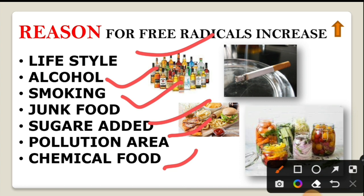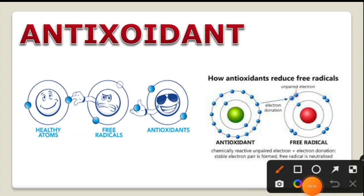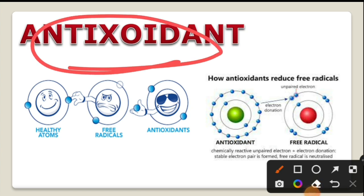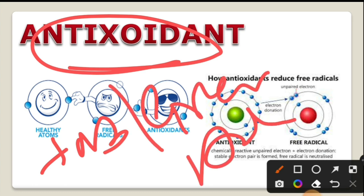To control free radicals, the key is antioxidants. Antioxidants are found in foods like green tea, which is one of the best antioxidant sources. Antioxidants help reduce the level of free radicals in the body and bring them under control.